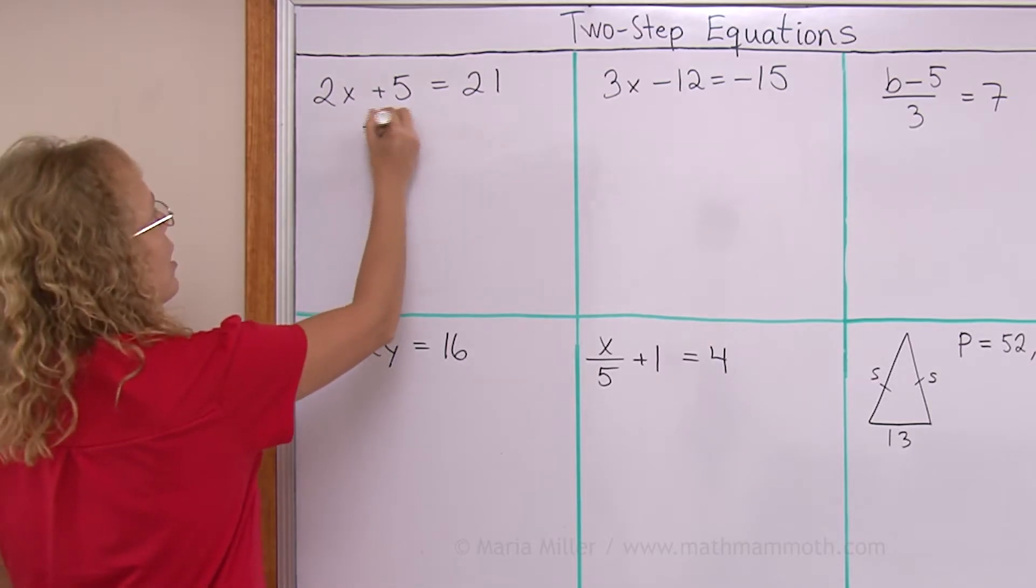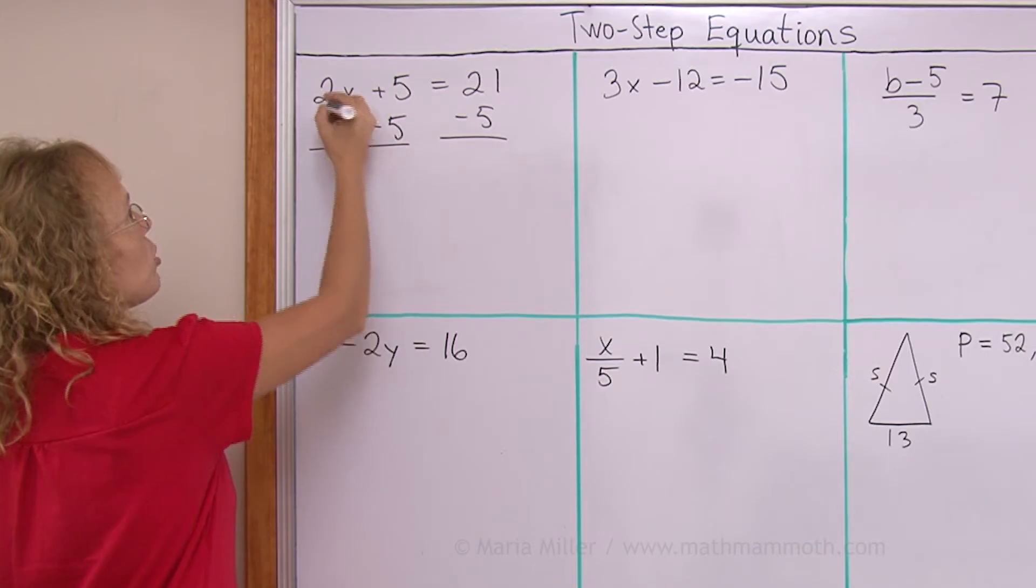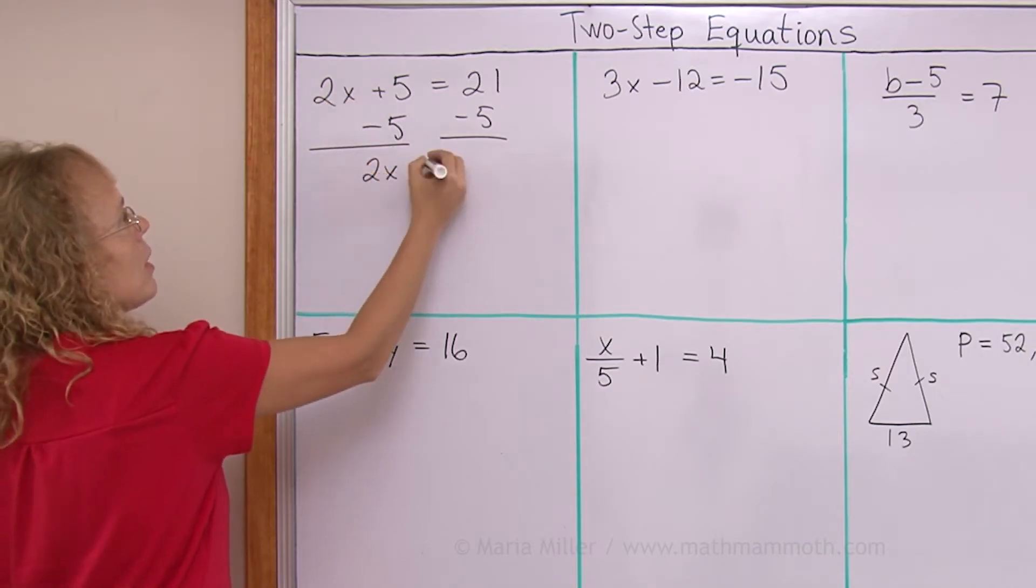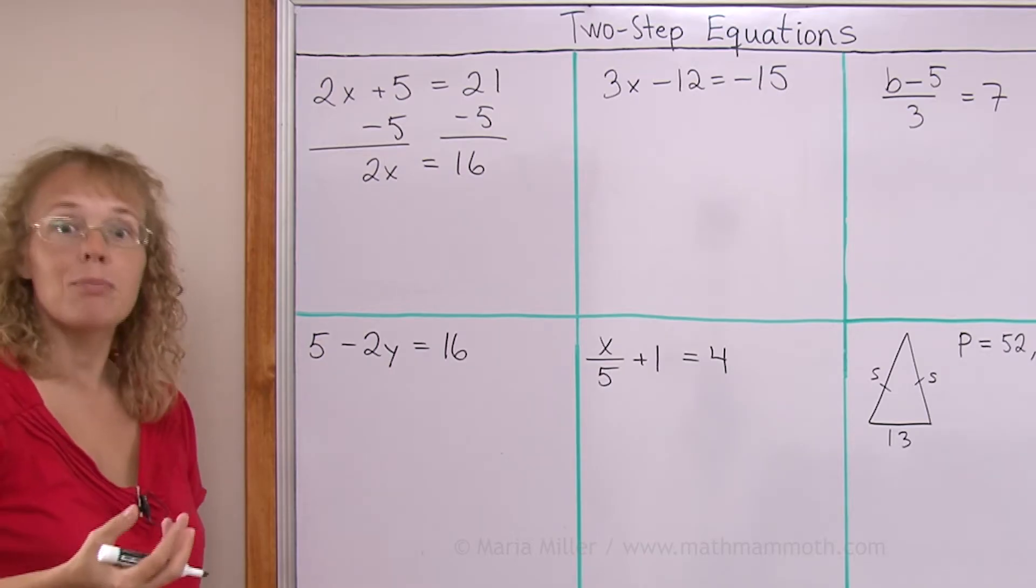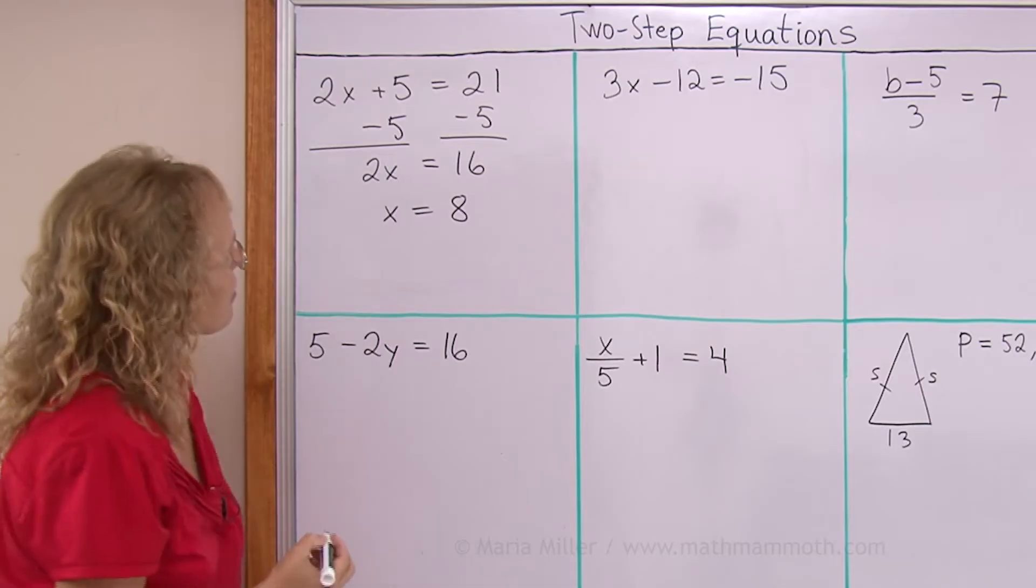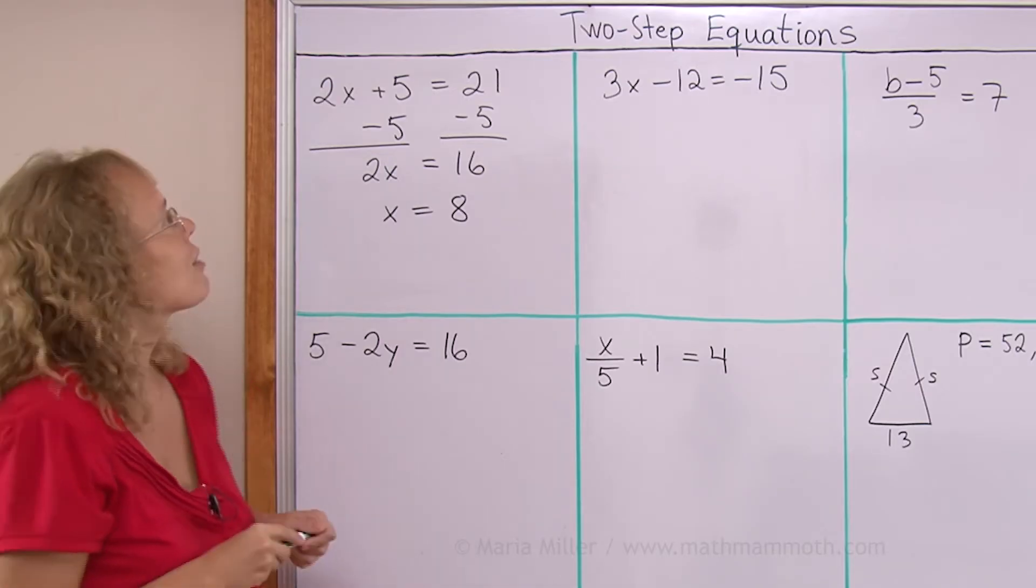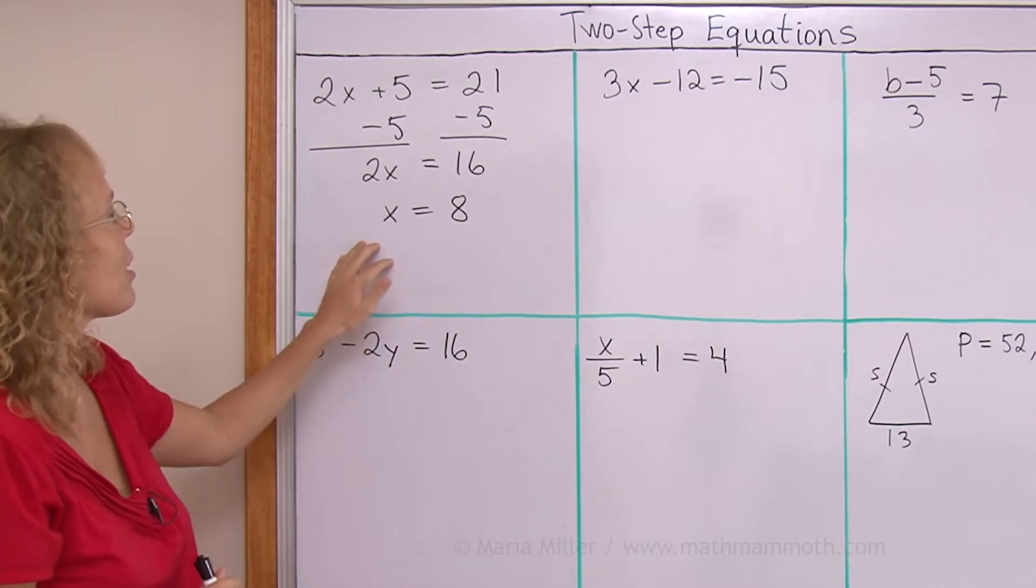So I will subtract 5 from both sides and then it leaves 2x here alone, right? Now here I get 16. And now it is very easy, you just divide both sides by two and get x equals 8. If I had done it the other way around I would have gotten a fraction here 5 over 2. So that's why this became easier.